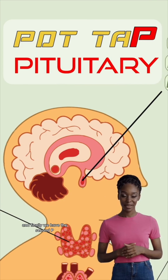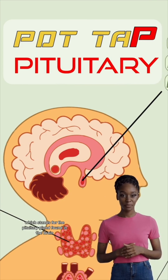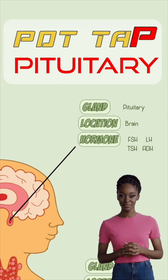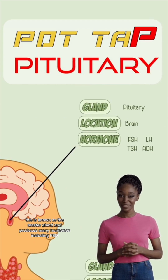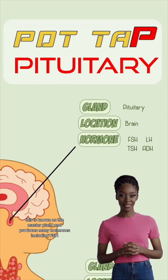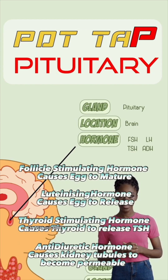And finally we have the second P, which stands for the pituitary gland, found in the brain. This is known as the master gland, and produces many hormones including FSH, LH, TSH and ADH.